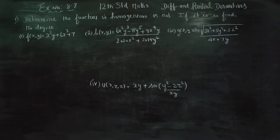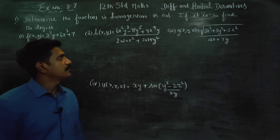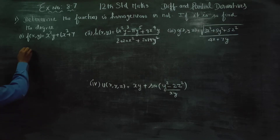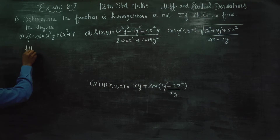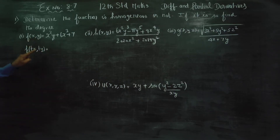Dear students, in exercise number 8.7, determine whether the function is homogeneous or not. If it is homogeneous, find the degree. To find whether a given function is homogeneous or not, you have to substitute x by tx and y by ty. Substitute.